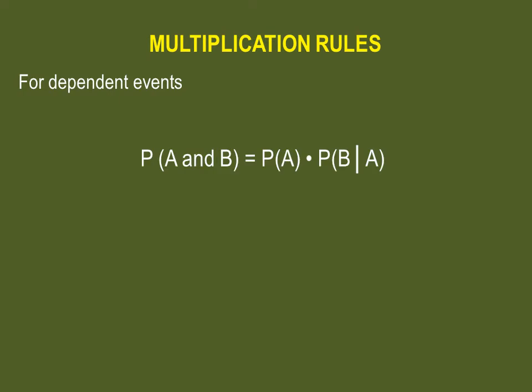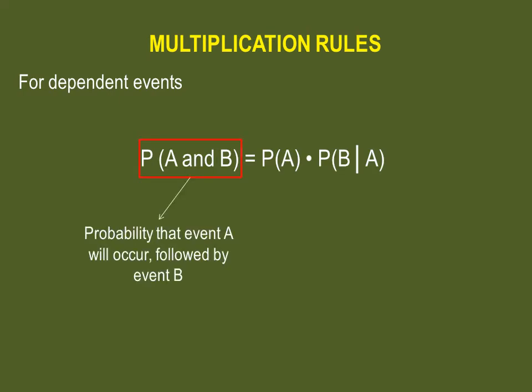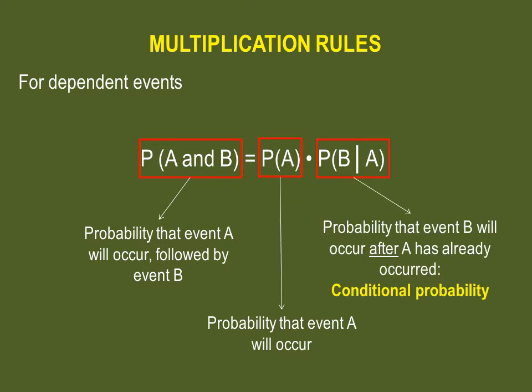This is the multiplication rule for dependent events. You have the probability that event A will occur followed by event B — the probability that A will occur multiplied by the probability that event B will occur after event A has already occurred. That's what the vertical bar stands for. It does not mean divide B by A. This is also known as the conditional probability.